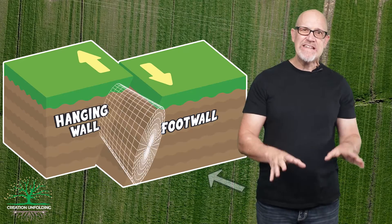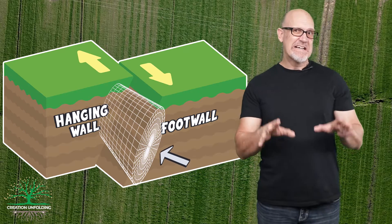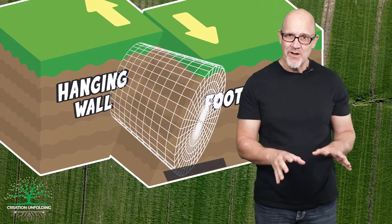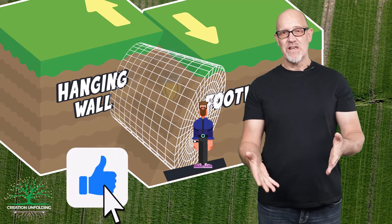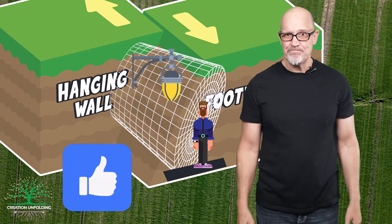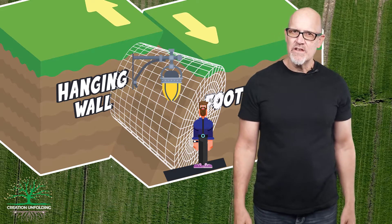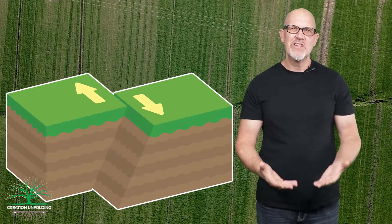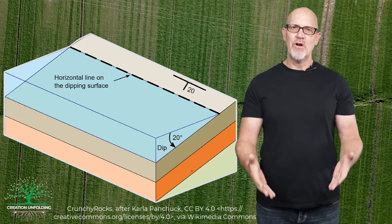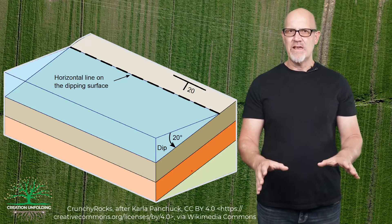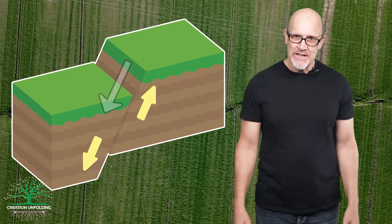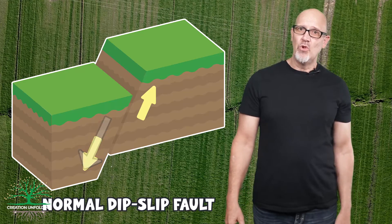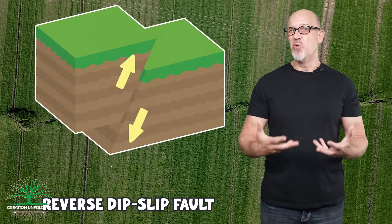This terminology comes from 19th century miners who literally dug tunnels into the fault in search of precious metals. Since the floor of the tunnel was cut into this block, they called it the foot wall, and the hanging wall gets its name because that's where they hung their lanterns. The name dip slip comes from the direction of slippage — the dip representing the angle the fault plane makes with the horizontal. If the hanging wall moves down the dip surface relative to the foot wall, we call this a normal fault; if it moves up, we call it a reverse fault.